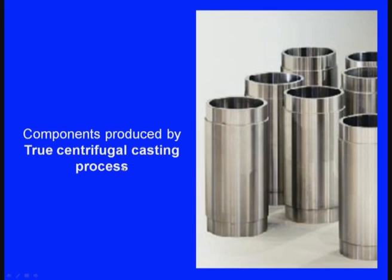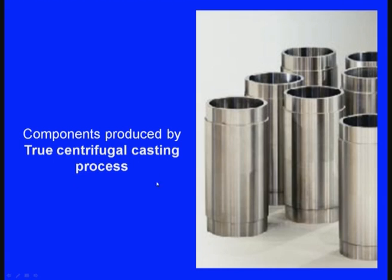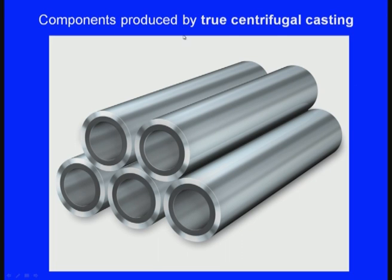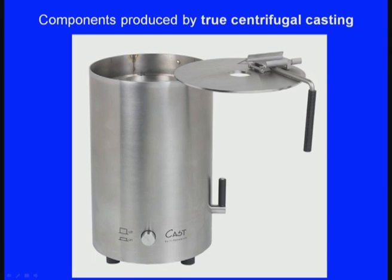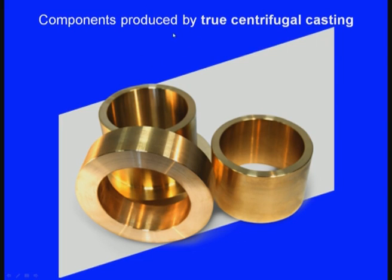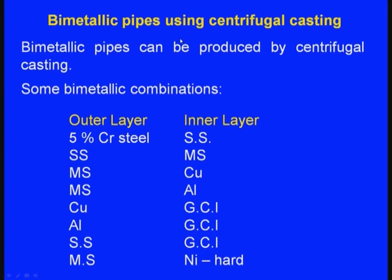These are the components produced by true centrifugal casting process — hollow tubes and hollow cylindrical cast components. Bimetallic pipes can also be produced by the centrifugal casting process.